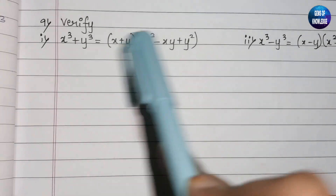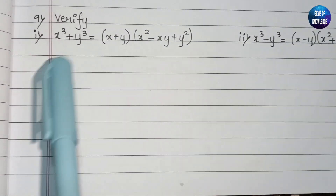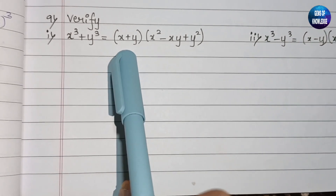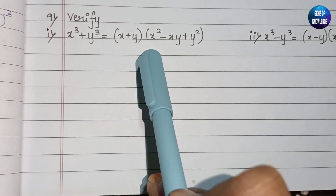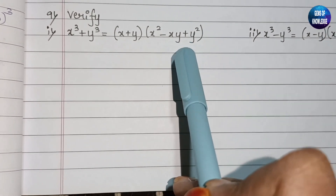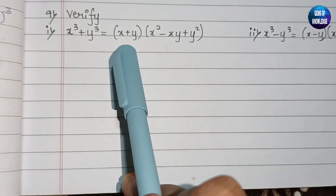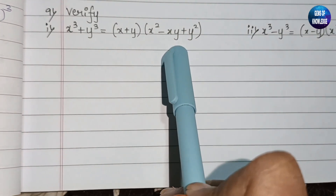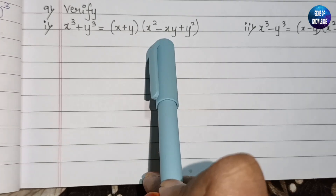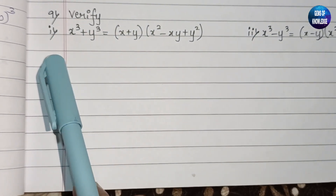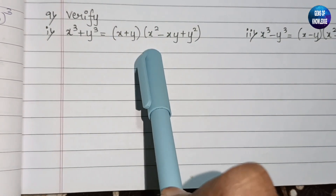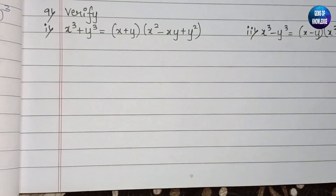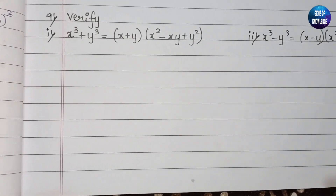The ninth question says 'verify'. You can see two questions are given. The first one is: x³ + y³ = (x+y)(x²-xy+y²). Either you can take the LHS and find the RHS, or take the RHS and find the LHS. For now, we will take the right hand side and try to find the LHS.